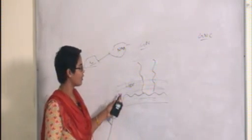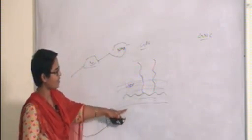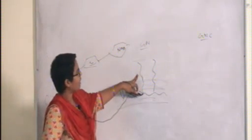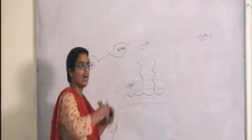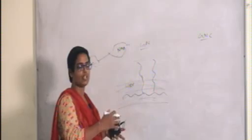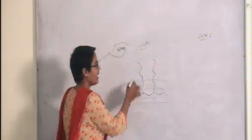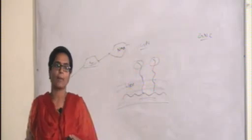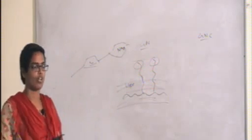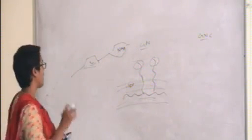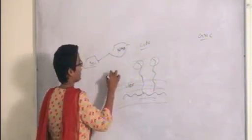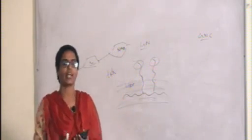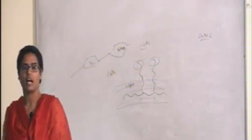Wall teichoic acids are attached with peptidoglycan and cell membrane. Lipoteichoic acids are present on the surface and these are the antigenic determinants of the gram positive cell wall. Teichoic acid components are part of the gram positive cell wall.